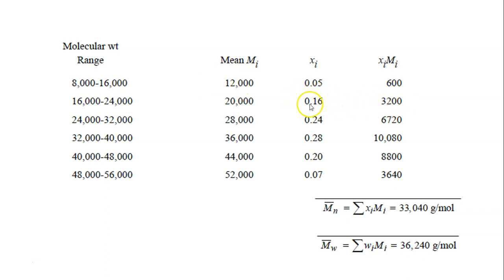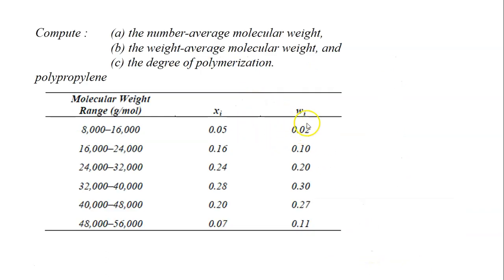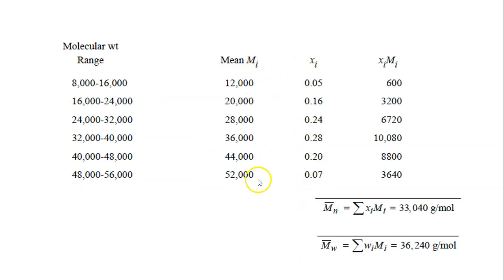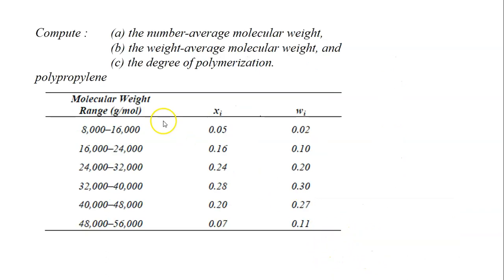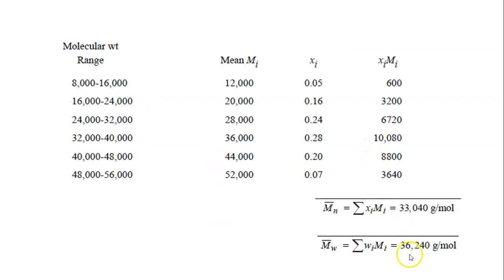For the second part, which is the weight average molecular weight, you do the same thing but multiply wi by mi for each size range — using the weight fraction values in the second column. The total of all those multiplications gives you Mw, which equals 36,240 grams per mole.